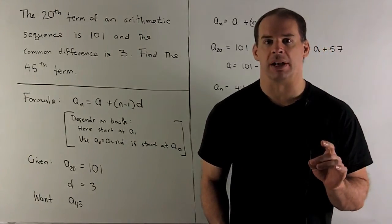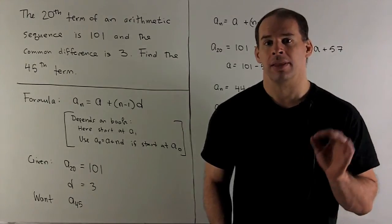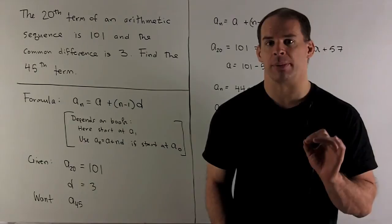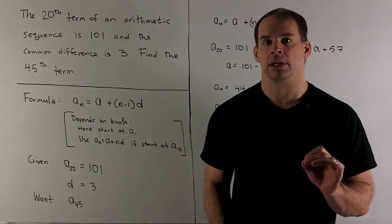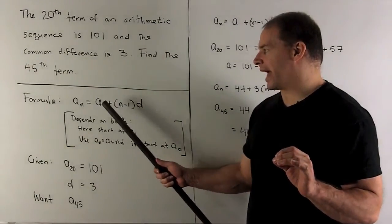The 20th term of an arithmetic sequence is given by 101, and the common difference is 3. Find the 45th term of the sequence. First thing I do, I write down our formula, so we have a_n equals a